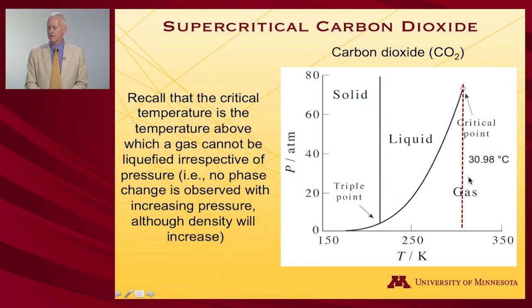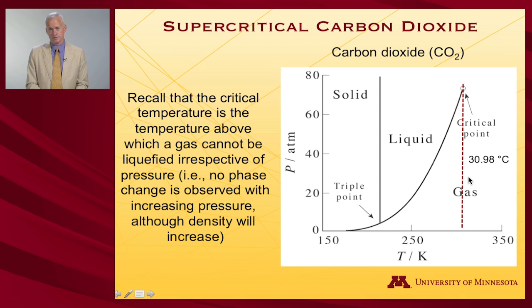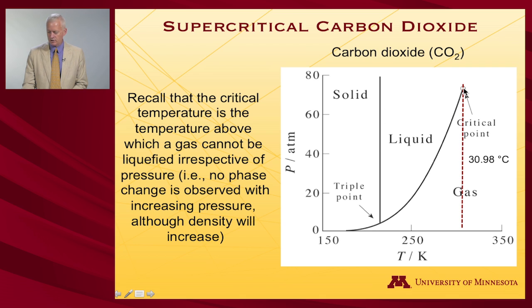Let's take a look at supercritical behavior. We'll come back to a substance we've looked at before, namely carbon dioxide. We spent some time when we were looking at real gases talking about supercritical phenomena. On the phase diagram for carbon dioxide, the critical point is at 30.98 degrees Celsius and a pressure on the order of 71 to 72 atmospheres.